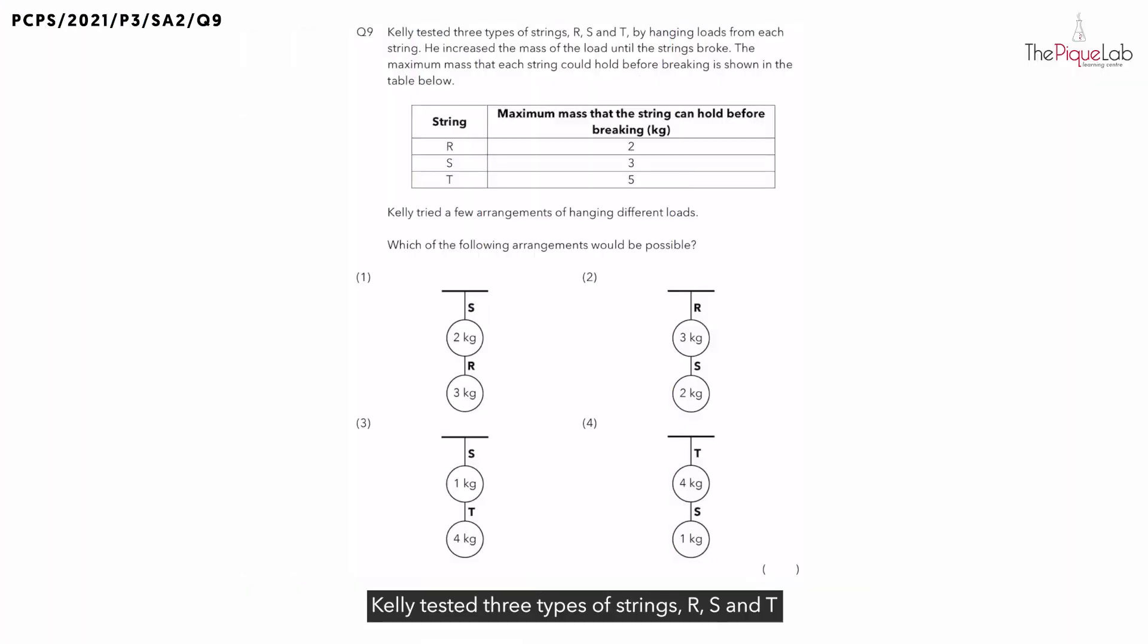Question 9. Kelly tested three types of strings R, S, and T by hanging loads from each string. He increased the mass of the load until the strings broke. The table shows the maximum mass that each string can hold before breaking. Kelly tried a few arrangements of hanging different loads, and we need to find which of the following arrangements below would be possible.